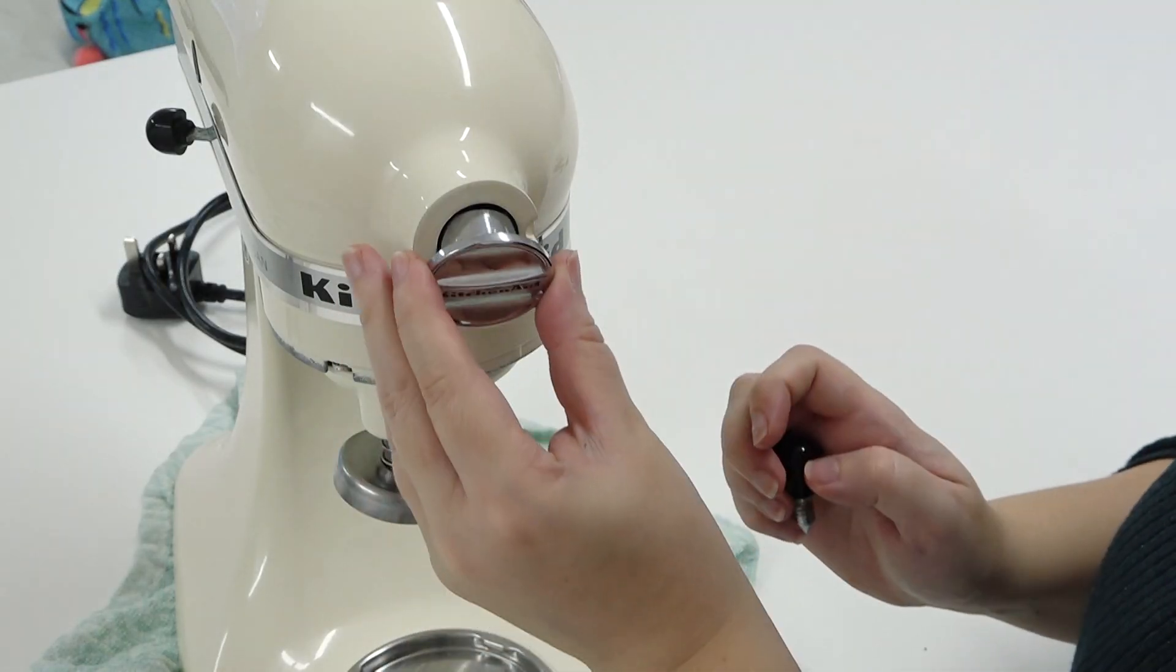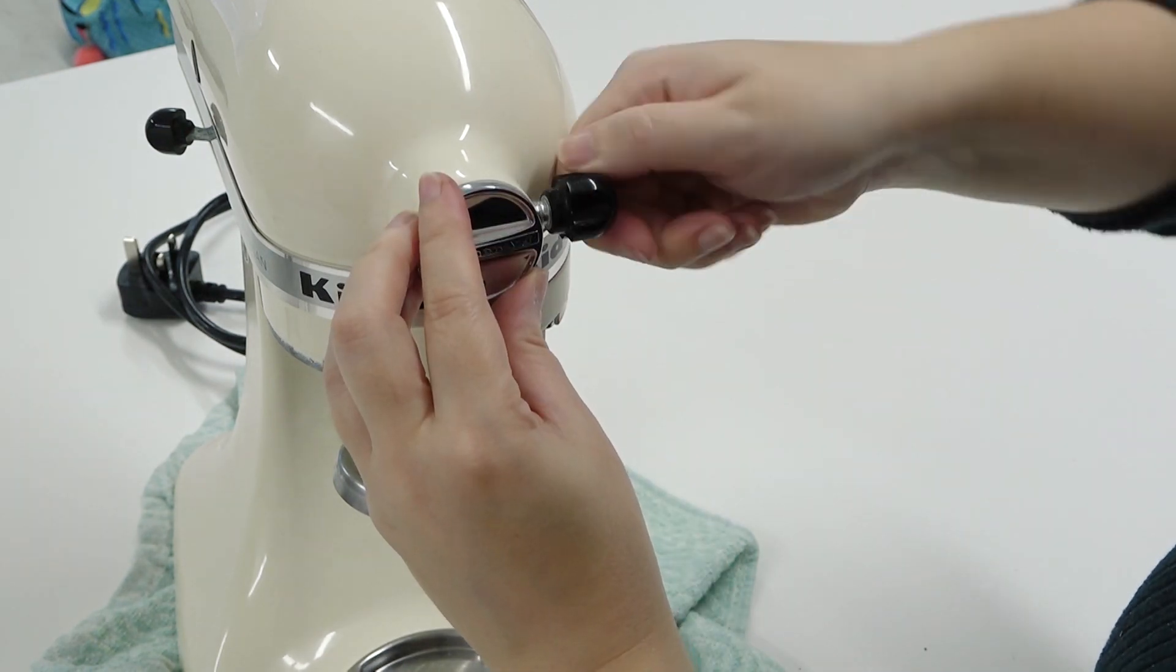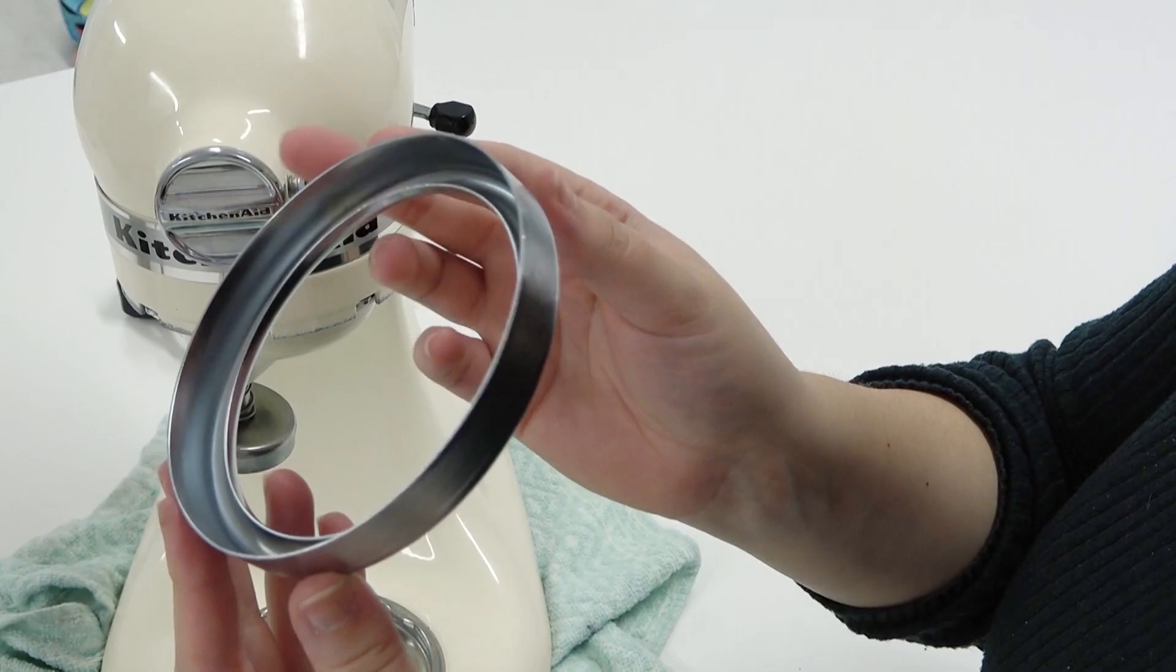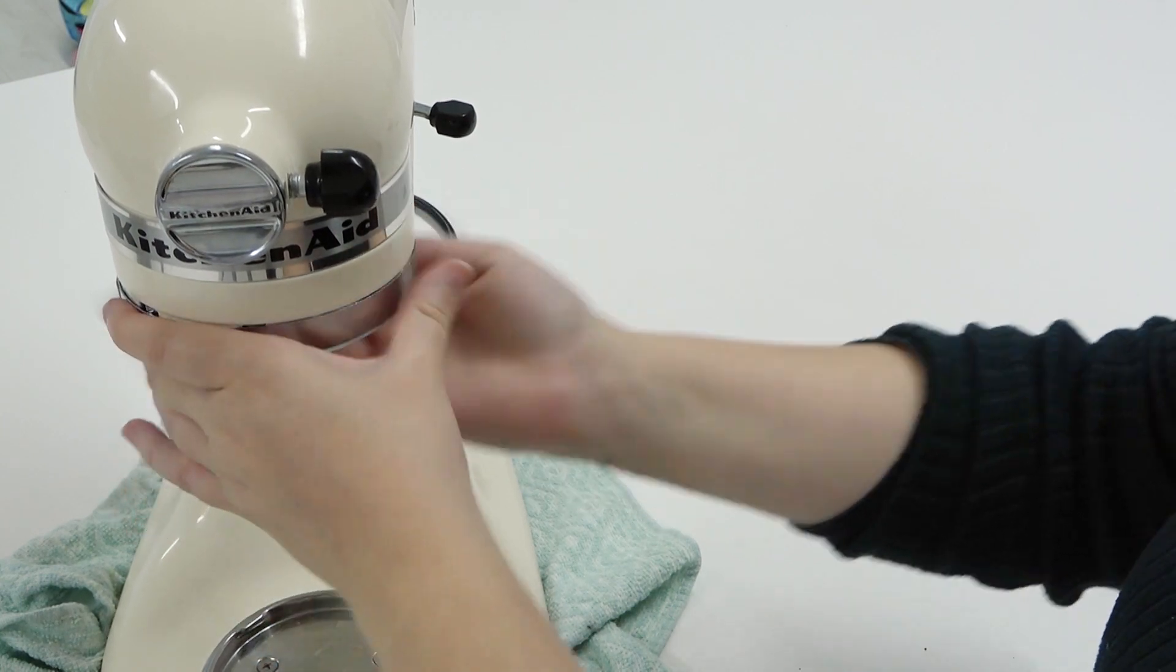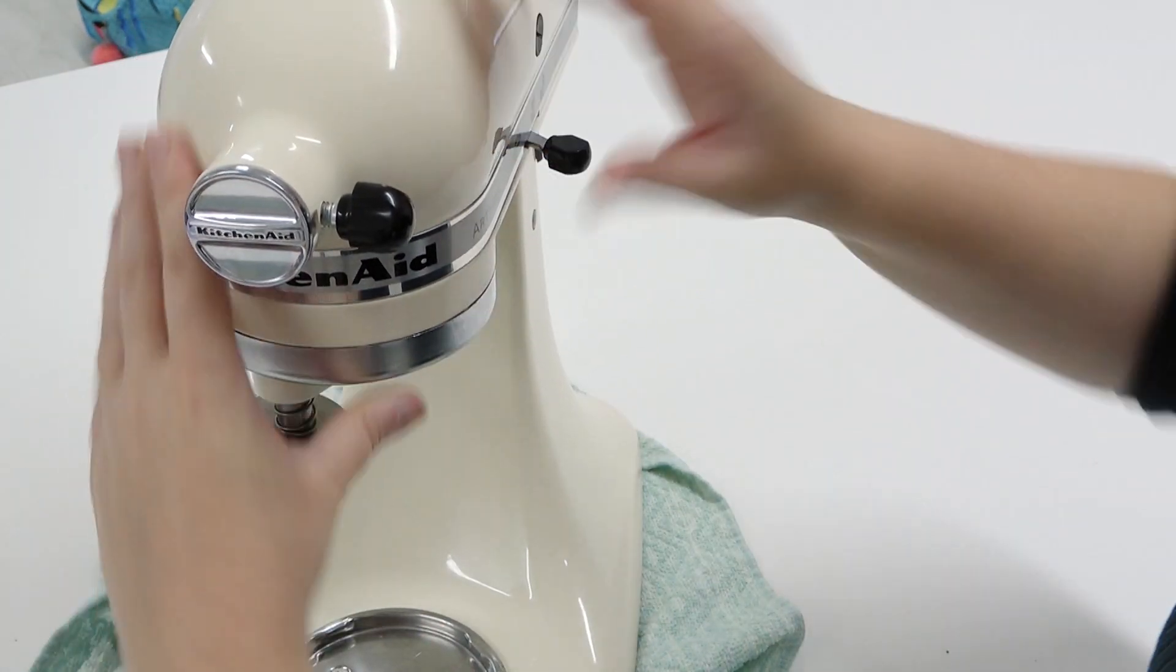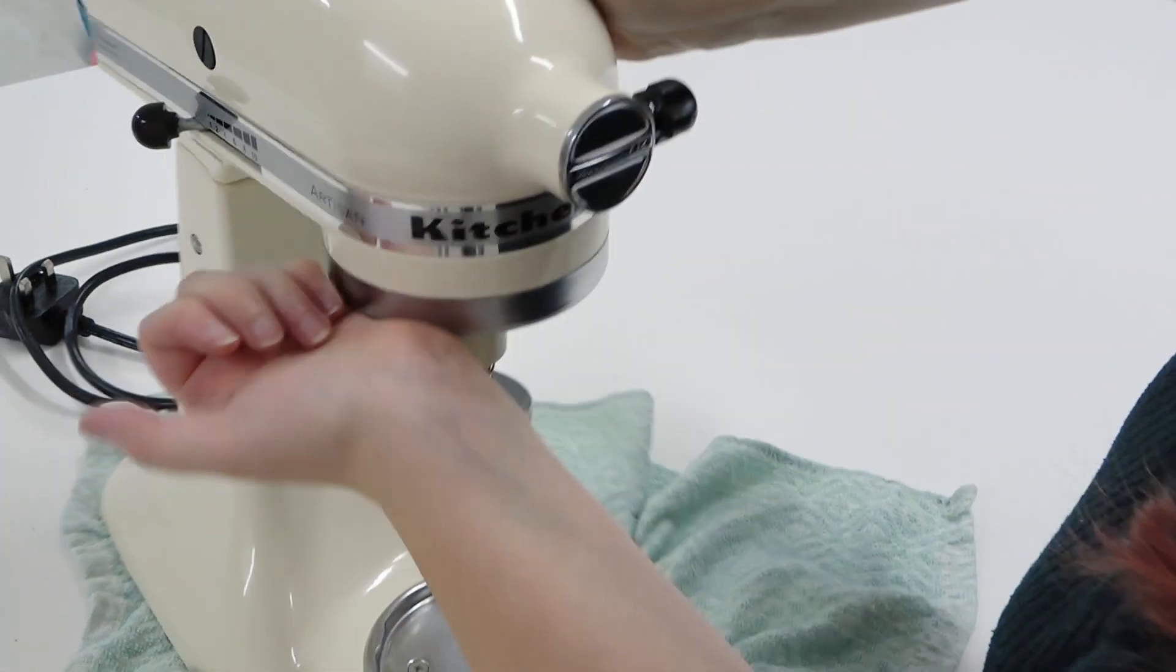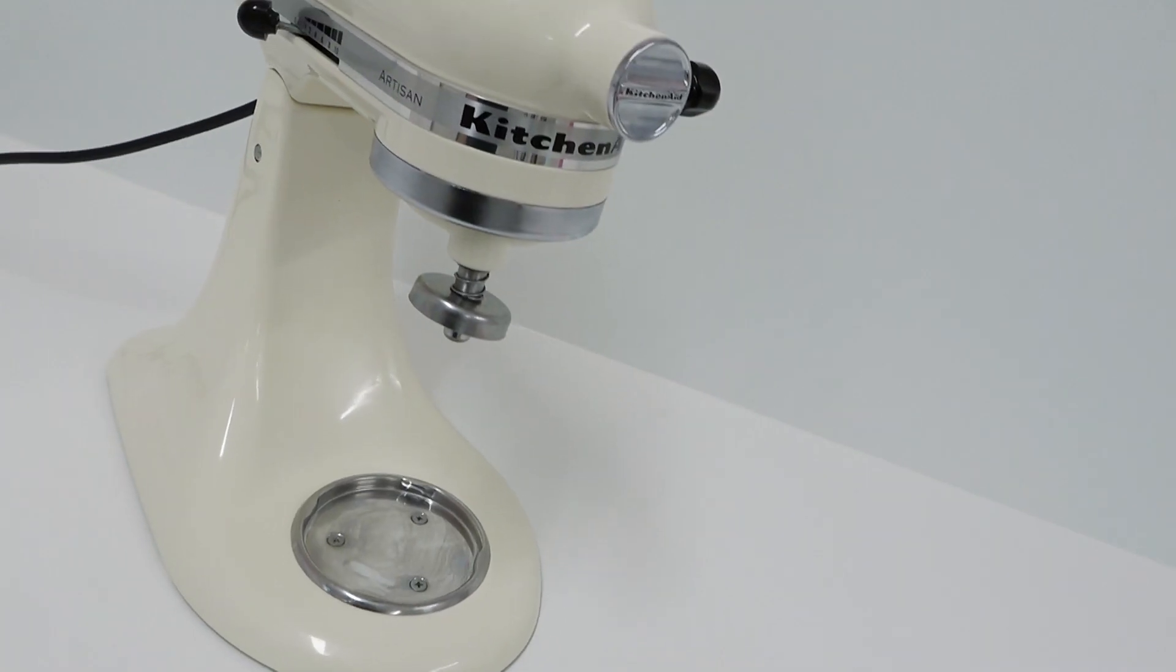Lastly, we're going to put our attachment cap back on and our silver ring. This just gets pushed up with a little bit of force with your palm until it fits snug all the way around. The reason why we only clean this every six months is because the more you take this ring off, the looser it's going to get each time, and you don't want this just to fall off in the middle of your mixing.